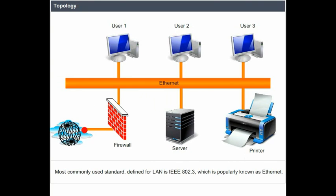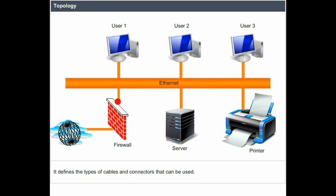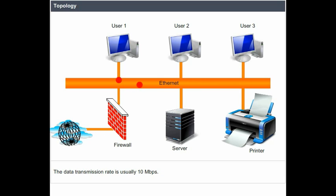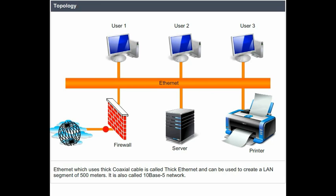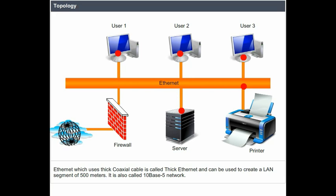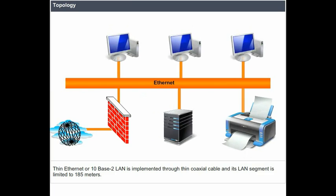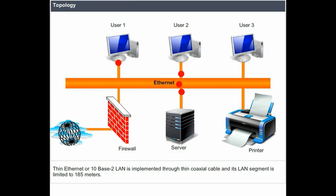The most commonly used standard defined for LAN is IEEE 802.3, popularly known as Ethernet. It defines the types of cables and connectors that can be used, with a data transmission rate of 10 Mbps. Ethernet using thick coaxial cable is called Thick Ethernet, or 10Base5, and supports a LAN segment of 500 meters. Thin Ethernet, or 10Base2, uses thin coaxial cable and is limited to a LAN segment of 185 meters.